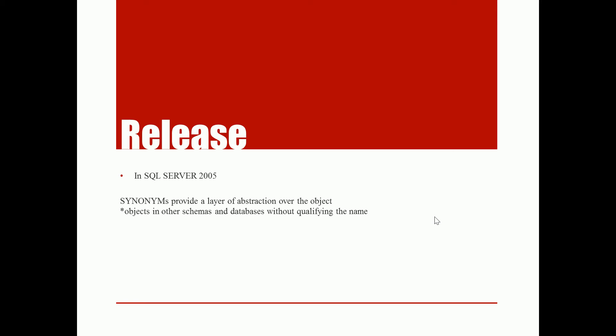Synonyms are slightly different from views because we create views on top of queries, not on an object. Before synonyms, whenever we needed to pull data from a different source, we used to enter the full qualified name in the view itself. After the 2005 release of synonyms, it helps you create an alias name and use that instead of writing the full qualified name each time.